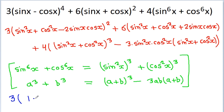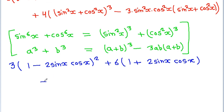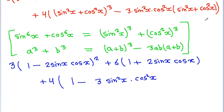Substituting back, we get 3 into (1 minus 2 sin x cos x)² minus 6 into (sin²x + cos²x minus 2 sin x cos x), which is 6 into (1 minus 2 sin x cos x), minus 4 into (1 minus 3 sin²x cos²x). We also note that 2 sin x cos x equals sin 2x.